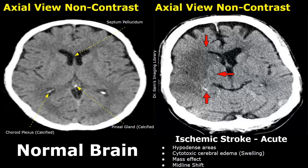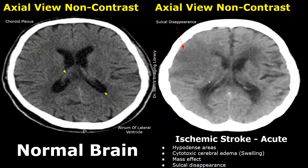Here, the swollen brain tissue has compressed the lateral ventricle, so this type of compression is known as mass effect. Due to this swelling, the structures in the midline of the brain may move to the opposite side — this is known as midline shift. In acute stroke, the swelling is significant and usually causes mass effect. Sulcal disappearance is also seen — we can see the sulci at the opposite side of the brain, but at the site of the stroke they are missing. This happens due to swollen brain tissue.